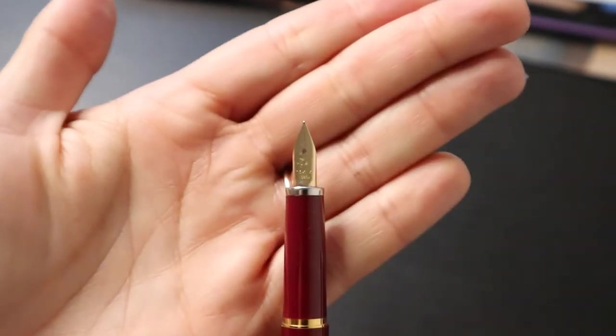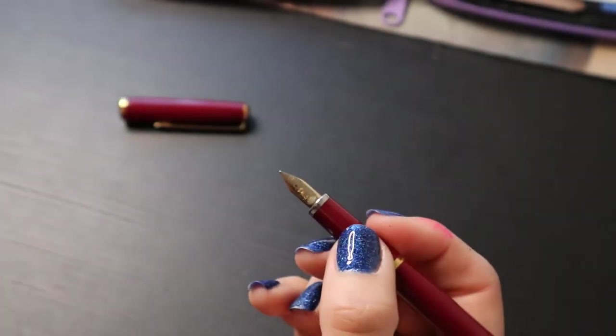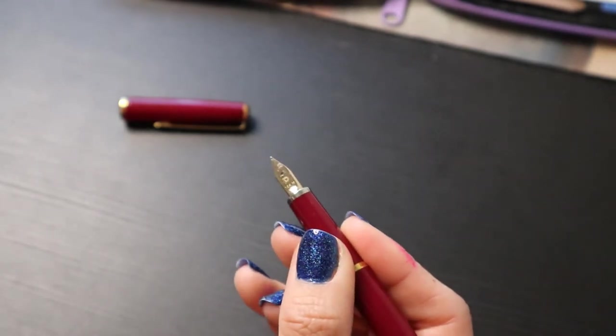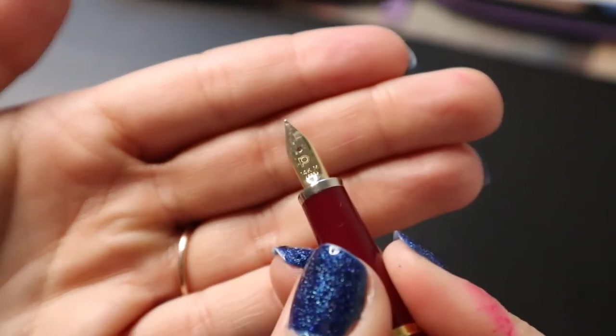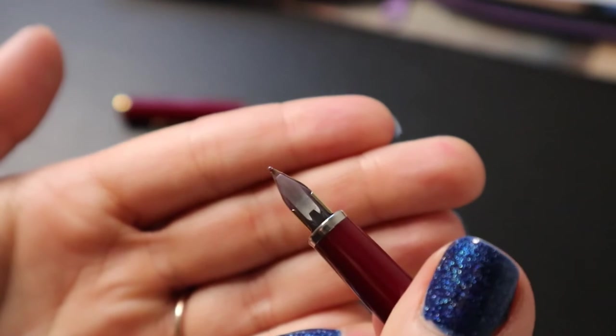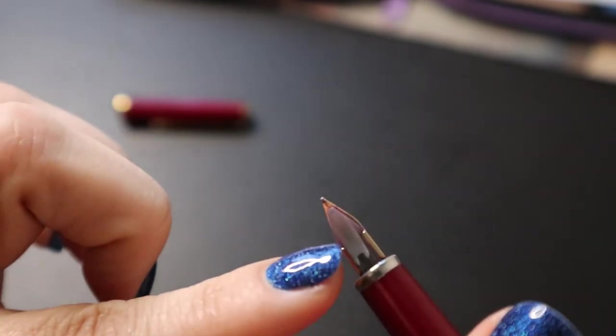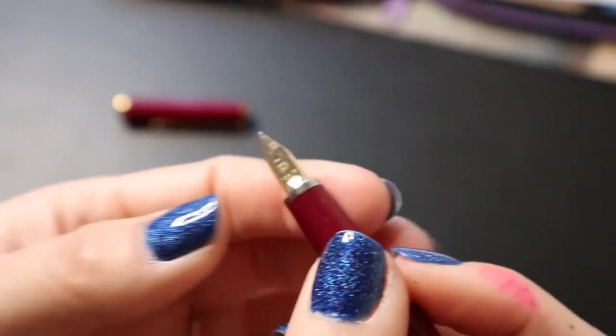This nib always reminds me of the Preppy nibs because it's small and it's a similar shape, as you can see. It has a nice P in there that the Preppys have too. Flat bead, slightly see-through on the end, as you can see. Very interesting to see that.